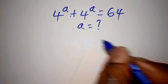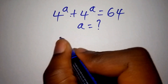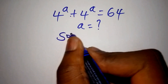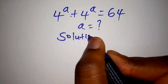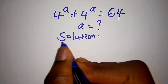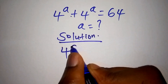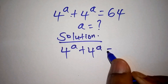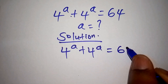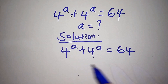Welcome, so that we can solve this math problem within the shortest time possible. So let us now start with the solution. Here we shall have 4 to the power of a, then plus 4 to the power of a is equals to 64. We are asked to solve for the value of a.